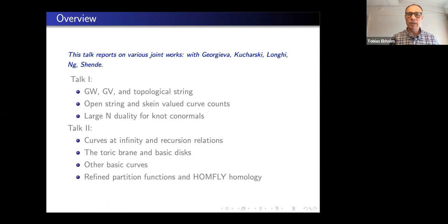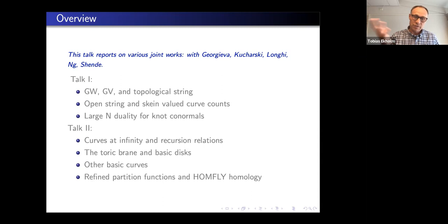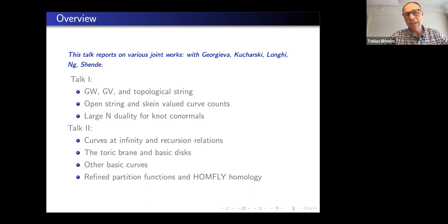These will lead to a proof — a mathematical proof — of this large N duality for knot conormals. It's very good to have that proof, but it also indicates the way forward where there will be a geometric interpretation. Then I'm going into talk two, where we'll have a geometric interpretation of recursion relations for, hopefully, HOMFLY polynomials or other open string partition functions. It also gives us a way to carry out calculations fairly easily by looking from infinity, and leads the way towards understanding whatever would be the Gopakumar-Ooguri-Vafa version for open strings.